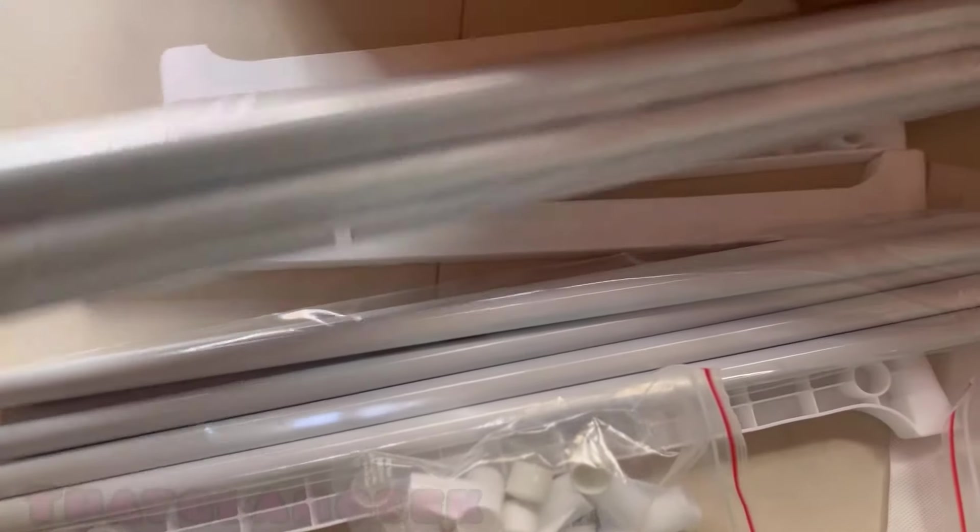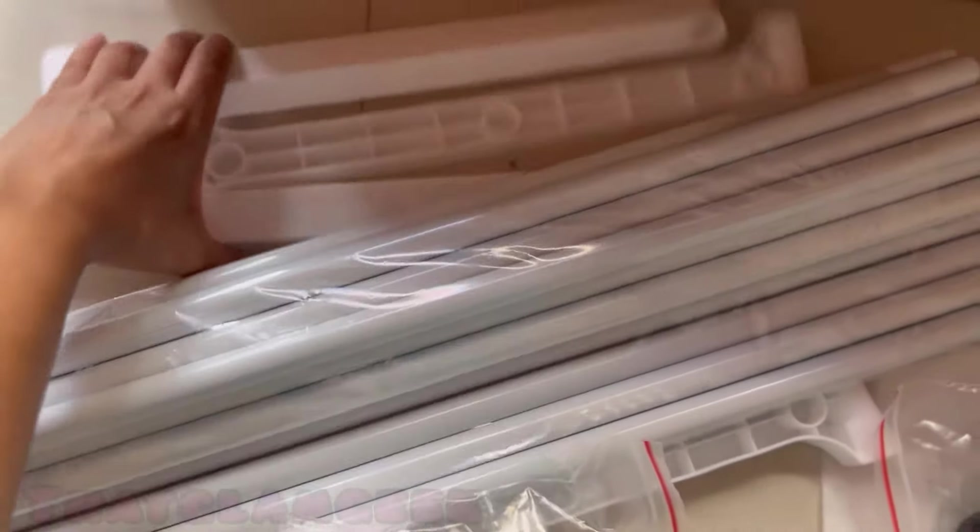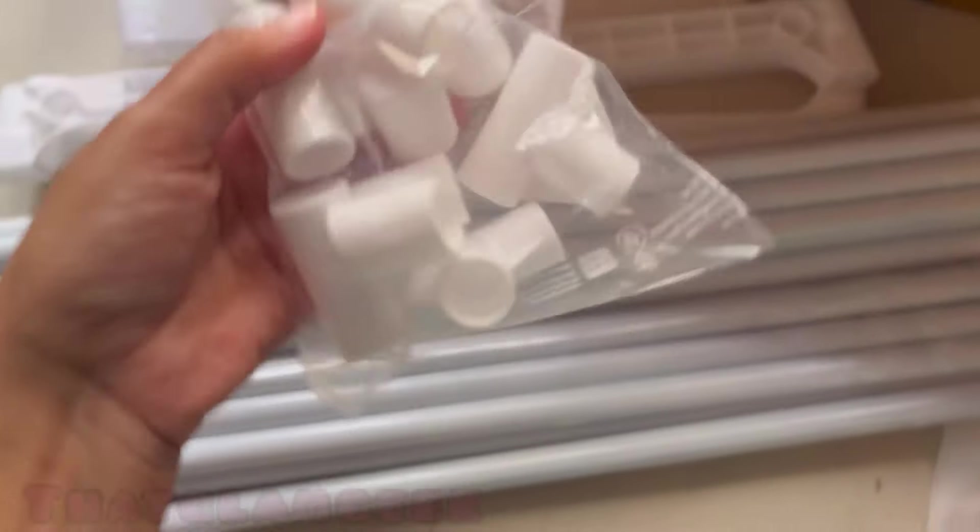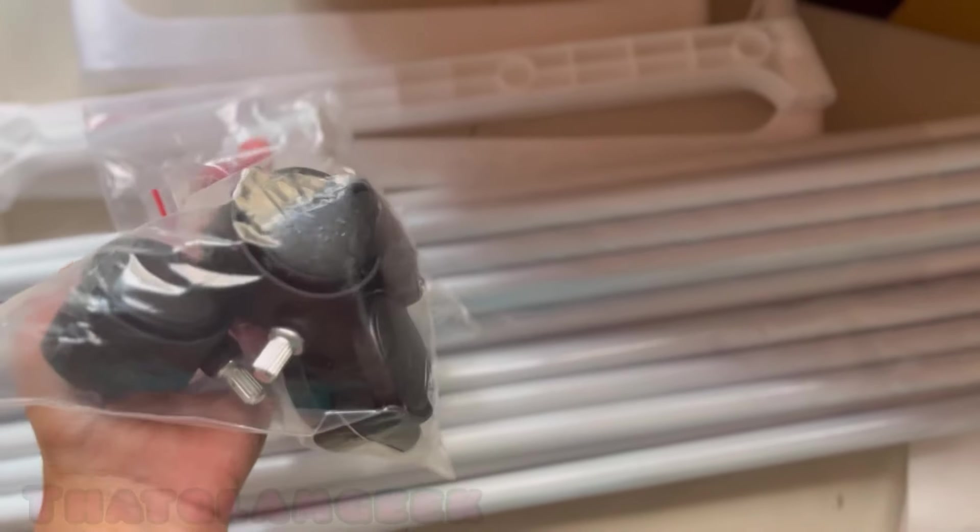There were 16 long tubes, 4 short tubes, 4 medium tubes, and 4 more small tubes. So overall, these were all the tubing and the tires that I had.